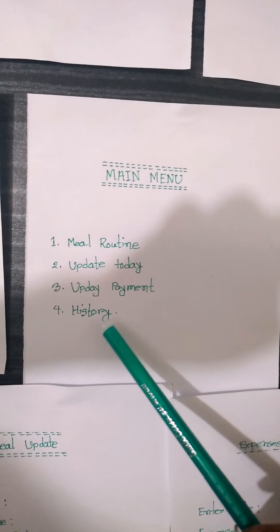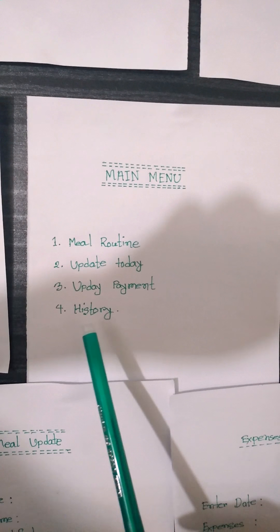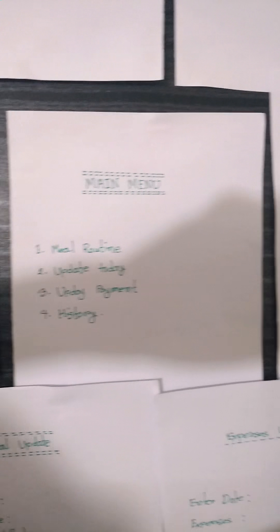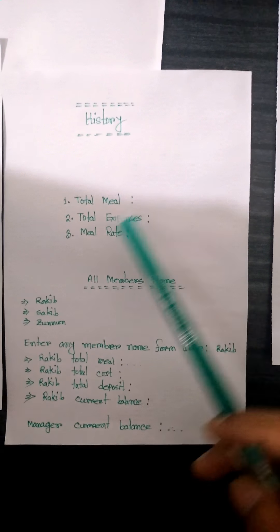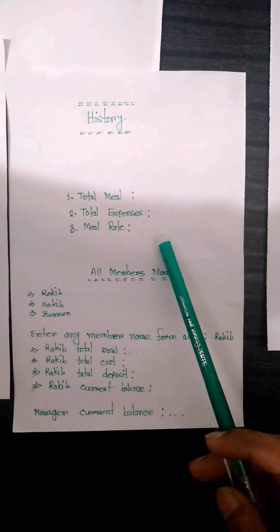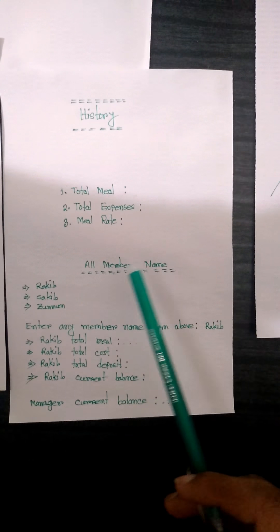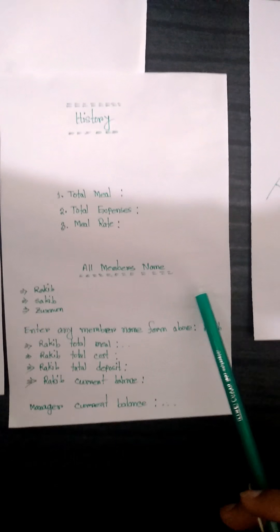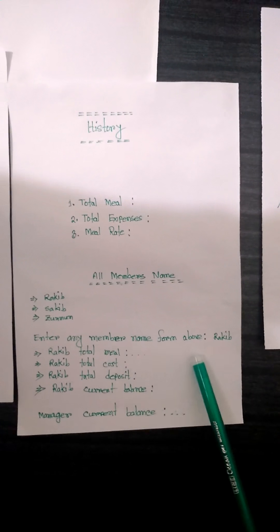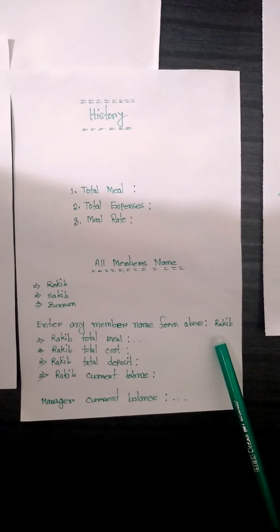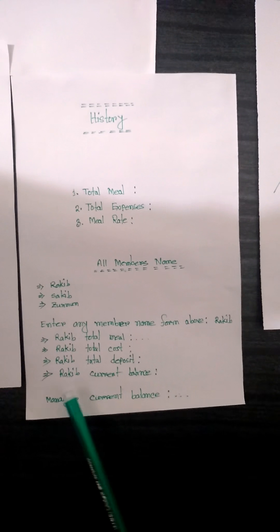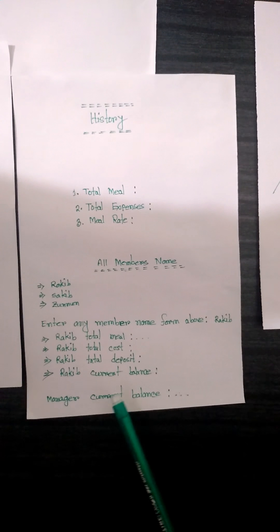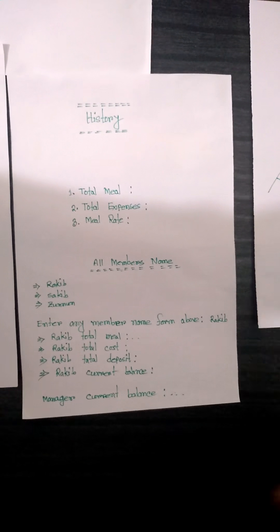The last option is history. If we press four, then we go to the history page. Here we see total meal, total monthly meal, total expense, and meal rate. We also see all member's names. If we select a name — for example, Rakib — we see Rakib's total meal, total cost, total deposit, current balance, and the manager's current balance. Thank you.